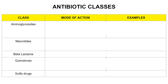In the first slide I have generalized certain classes of antibiotics and given the general mode of action. Further on we will be discussing specific antibiotics. There are majorly five classes of antibiotics: aminoglycosides, macrolides, beta-lactams, quinolones, and sulfa drugs.